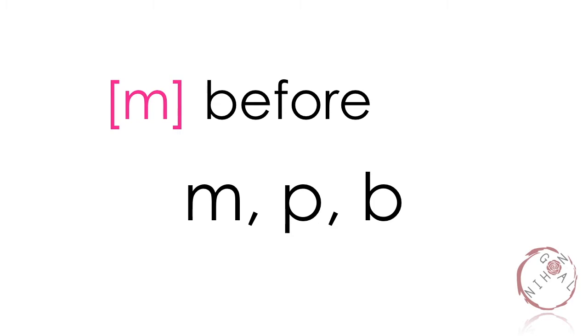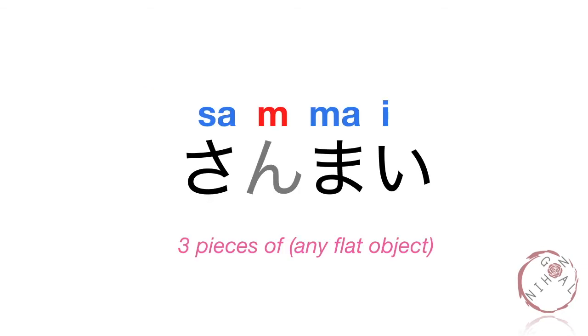It is pronounced as M if it comes before M, P, B syllables. If you notice, that is when your lips are touching, like ma, pa, ba, mi, pi, bi, and so on. Here are some examples.